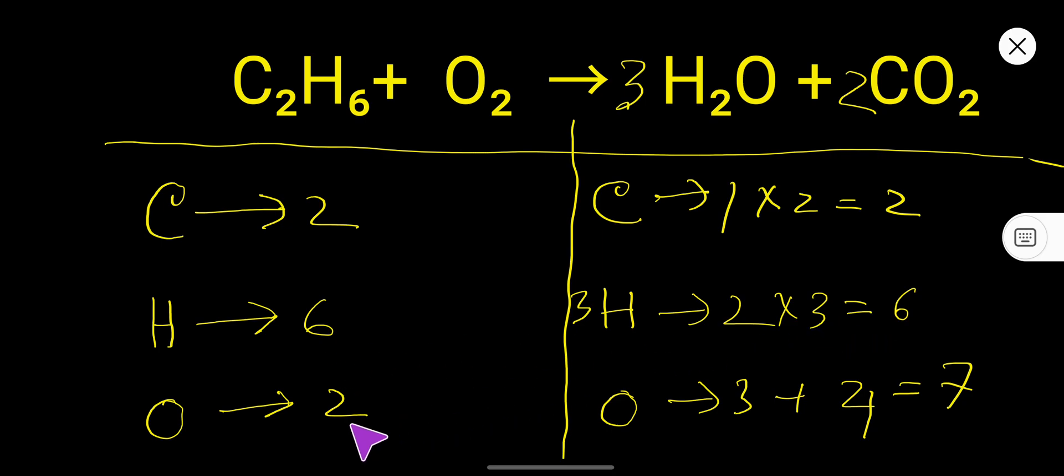So hydrogen is balanced but here oxygen is 2, here 7. So you need here 7 oxygen, 7 oxygen.